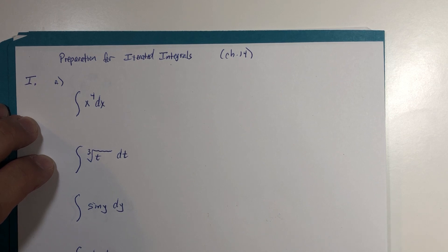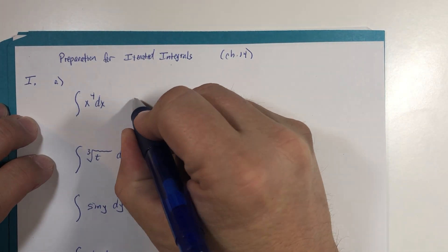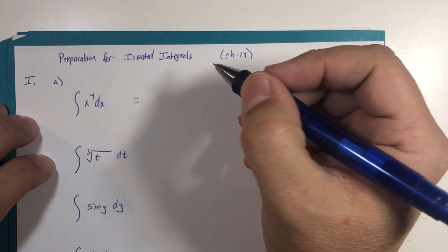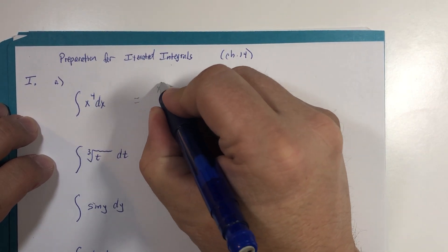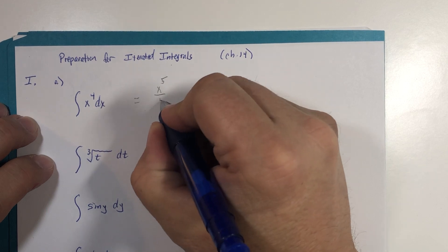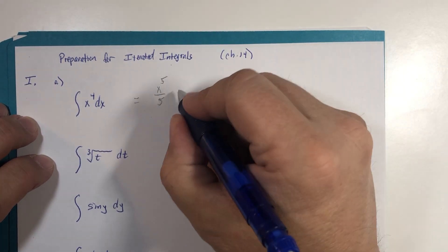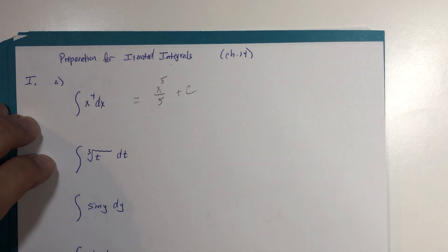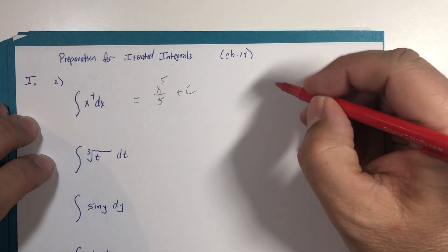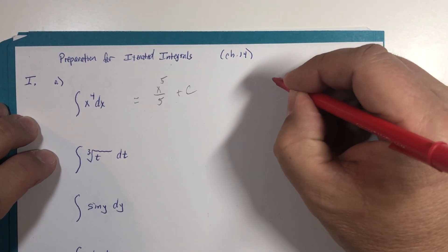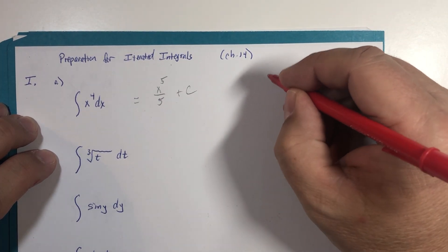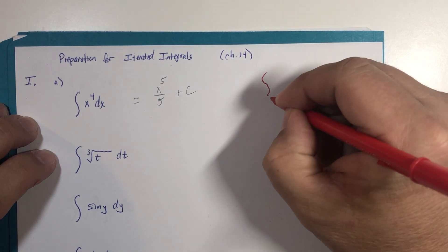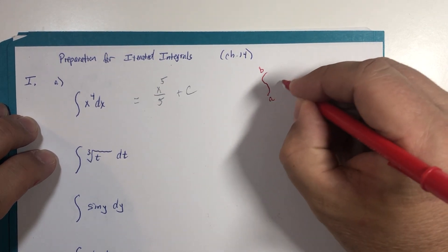So if we were going to integrate x to the fourth, that's right, we would get x to the fifth over five or one-fifth x to the fifth and there'd be a constant. Now what we're going to learn in these last two chapters is that every single integration we're going to focus on is going to be what you call a definite integral.